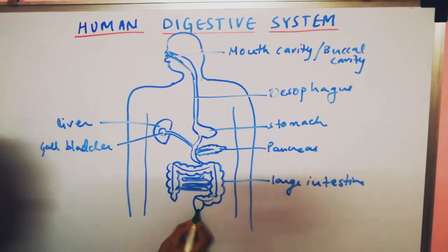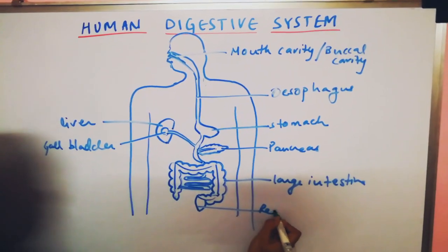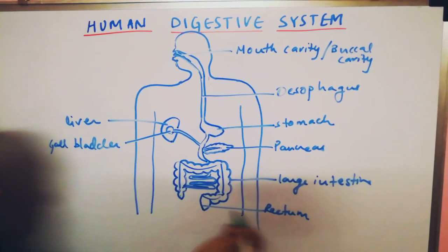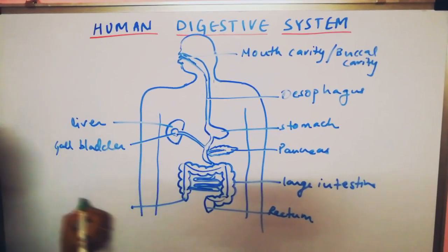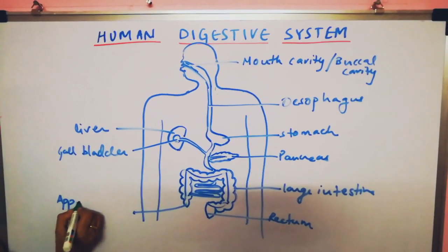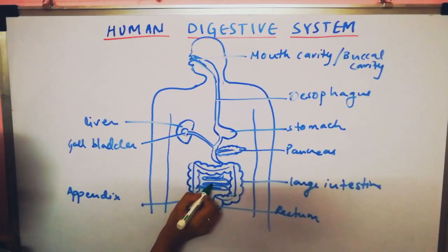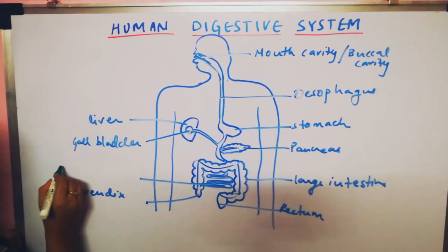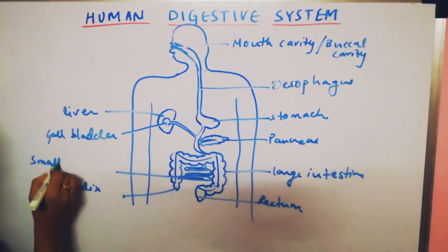Then this part is called as rectum. Then this part is known as appendix. And lastly, this one is known as small intestine.